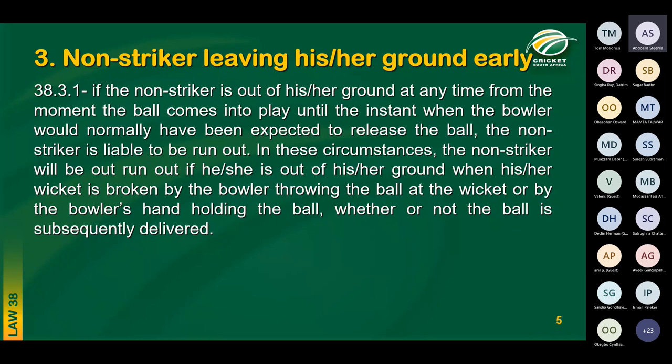Law 38.3 is a new placement to the run-out law. It was previously under Law 41 — fair and unfair play. Effective 1st October 2022, the lawmakers moved this section to the run-out law. It covers the non-striker leaving his ground early, and the bowler then trying to run out the non-striker. The window period starts once the bowler takes his or her first step and ends when the bowler would normally have been expected to release the ball.